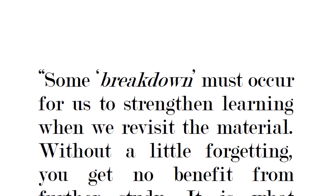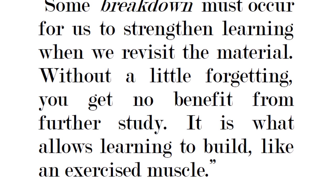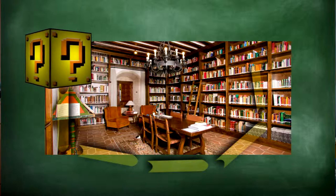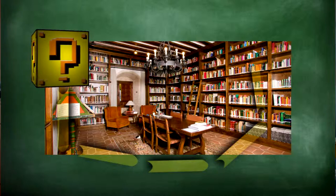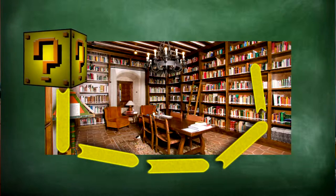Mr. Carey went a little bit further in his book and explained the importance of forgetting in learning. According to the author, some breakdown must occur for us to strengthen learning when we revisit the material. Without a little forgetting, you get no benefit from further study. It is what allows learning to build, like an exercised muscle. The more time you ignore the yellow line on the floor, the more it's going to deteriorate because what's not used gets damaged with time. Coming back from time to time to draw a new line over the old one will make it more durable and thicker.